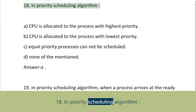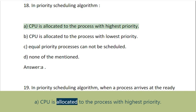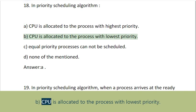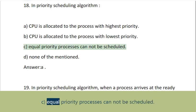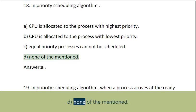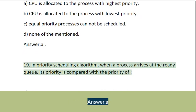Question 18: In priority scheduling algorithm: A. CPU is allocated to the process with highest priority, B. CPU is allocated to the process with lowest priority, C. Equal priority processes cannot be scheduled, D. None of the mentioned. Answer: A.